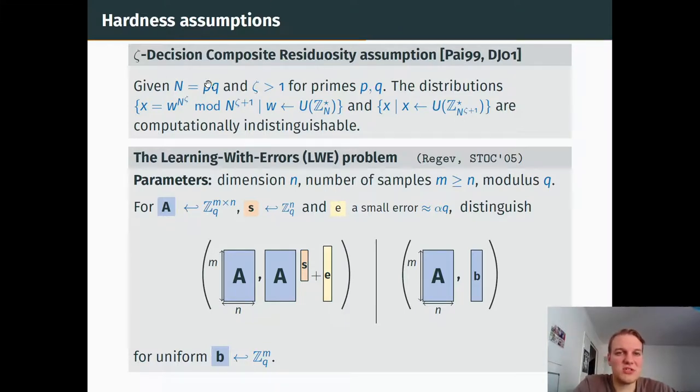Something important also are the hardness assumptions used in our constructions. For the first one, we need the decision composite residuosity assumption. It states that n to the zeta residue, if I take one uniformly mod n to the zeta plus one, it's actually computationally indistinguishable from the uniform distribution over the invertible elements of Z_n^{zeta+1}. The second problem, the learning with errors problem, is used in both constructions, and it states that if I take a random matrix A, a random vector S, and a small random error vector E, the distribution of (A, AS + E) is indistinguishable from (A, B) where B is just a uniform vector.